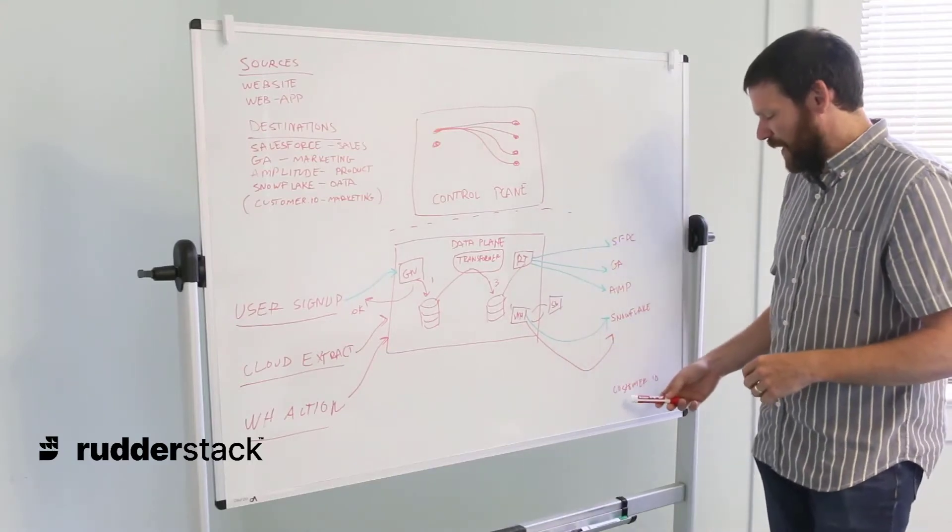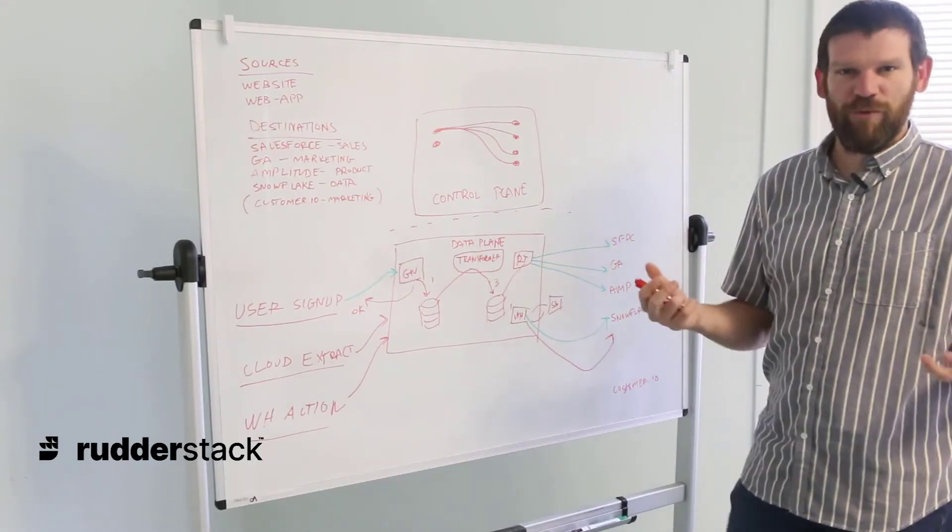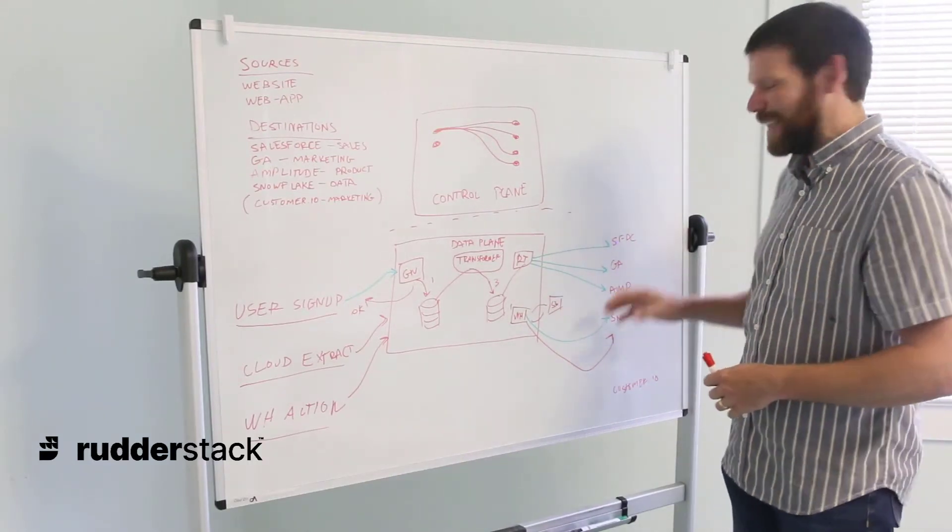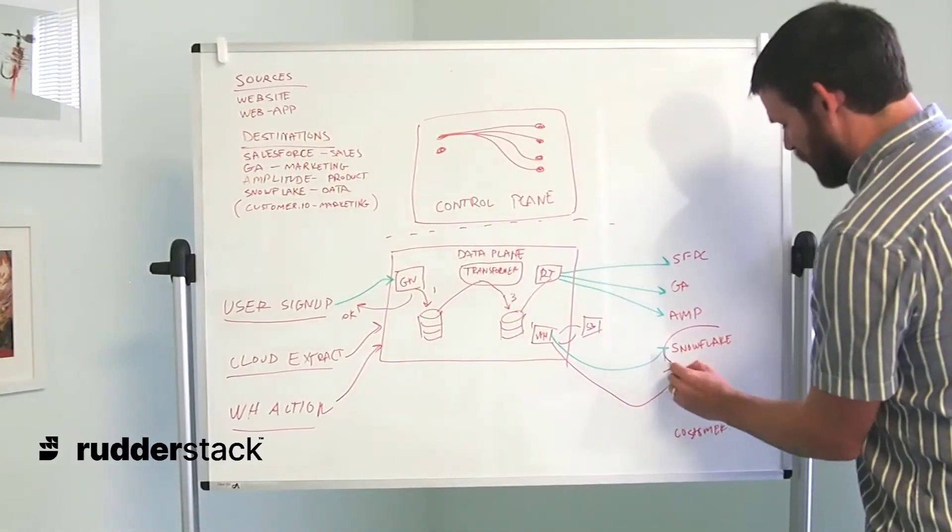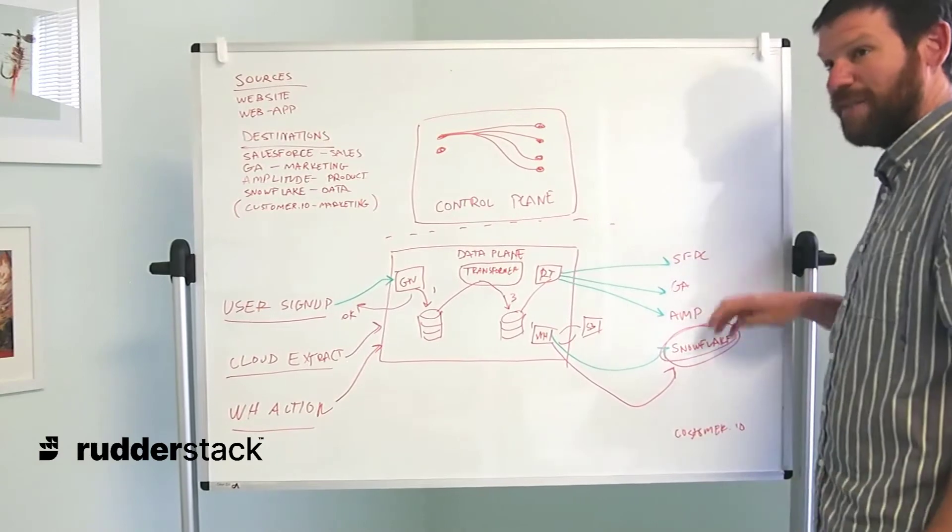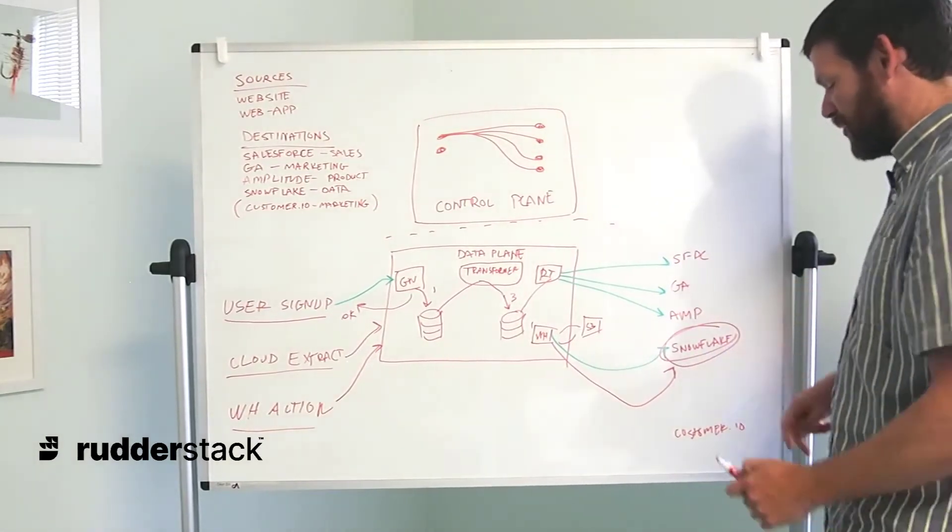Further, as we discussed earlier, in Customer.io, we want to have more of an enriched customer view of how we're going to segment these customers. This is going to be built off the data we have in Snowflake. We're going to derive that table of what we want to be in Customer.io.